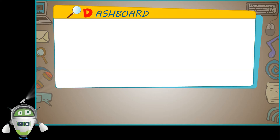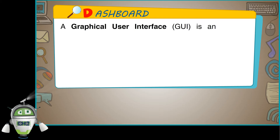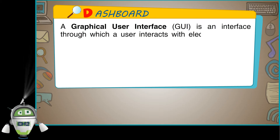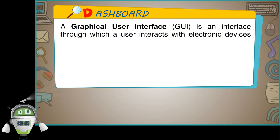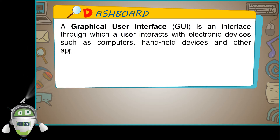A graphical user interface, GUI, is an interface through which a user interacts with electronic devices such as computers, handheld devices and other appliances.